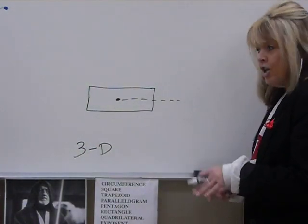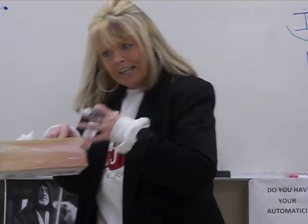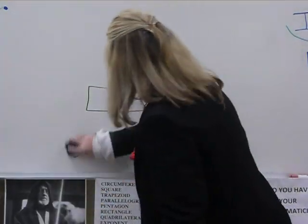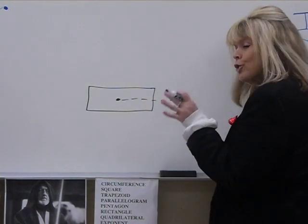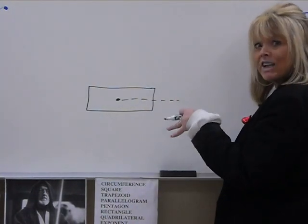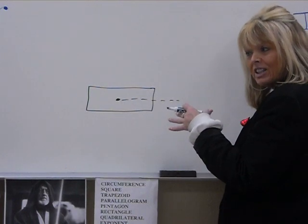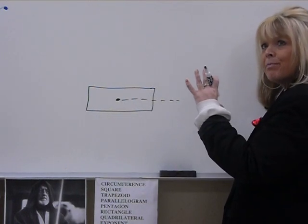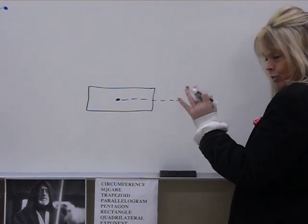So two dimensions is flat, three dimensions is like in space. We're trying to draw a three-dimensional object on a flat board. That dotted line is what helps you see the depth of it, which makes it look like it's 3D.